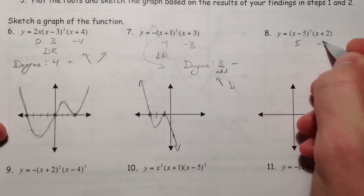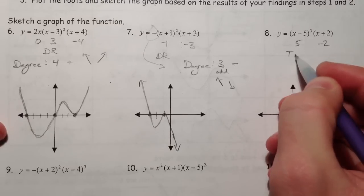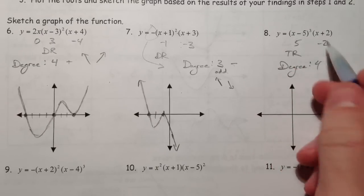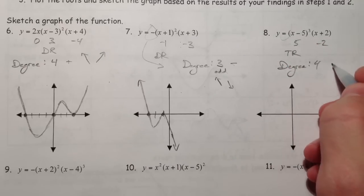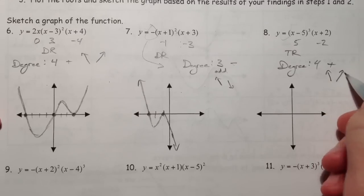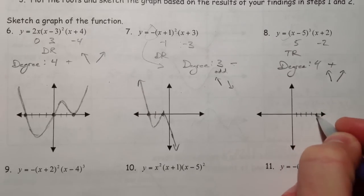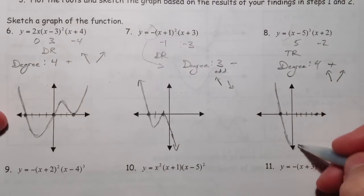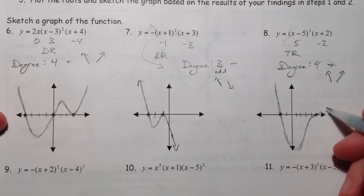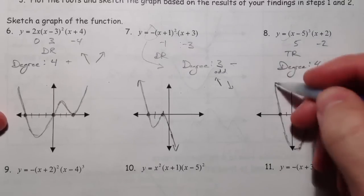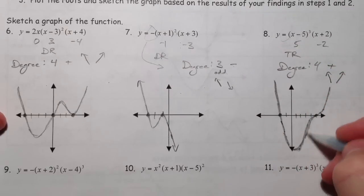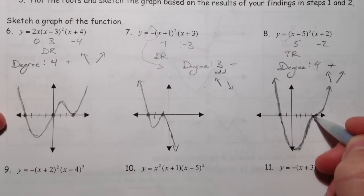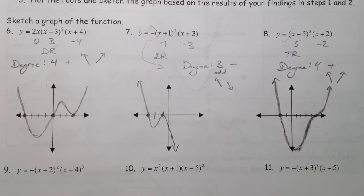Next one: zeros at five and negative two. Five is raised to the third power so it's a triple root. The degree is one, two, three, four — three of those plus one — so it's degree four, and it's got a positive out front, so it behaves like a regular parabola. It comes from the top, crosses at negative two, and then does a little slowdown at five because it's the triple root — aiming as if it's crossing before and then taking the turn.